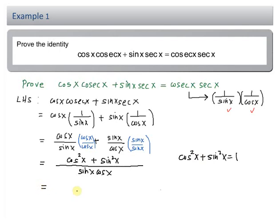So the next step, I change the cos squared x plus sin squared x equal to 1. I have 1 over sin x cos x.